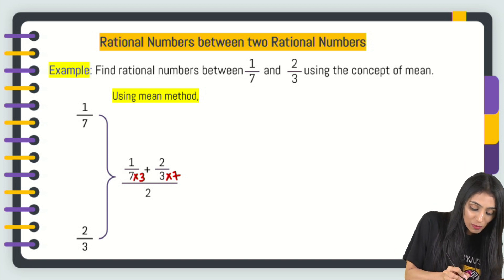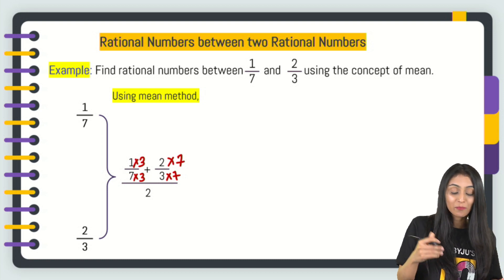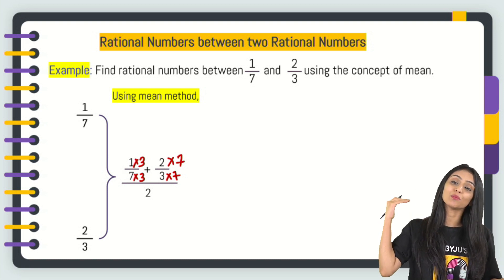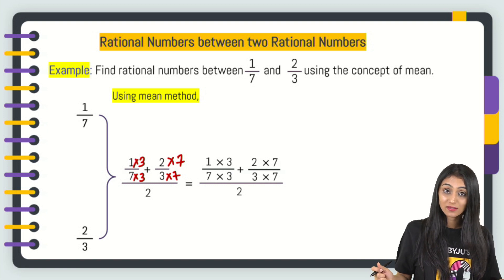Since you are multiplying by 3 in the denominator, multiply by 3 in the numerator. Since here I'm multiplying by 7 in the denominator, I'll have to multiply by 7 in the numerator also. What does this become? We get this divided by 2.